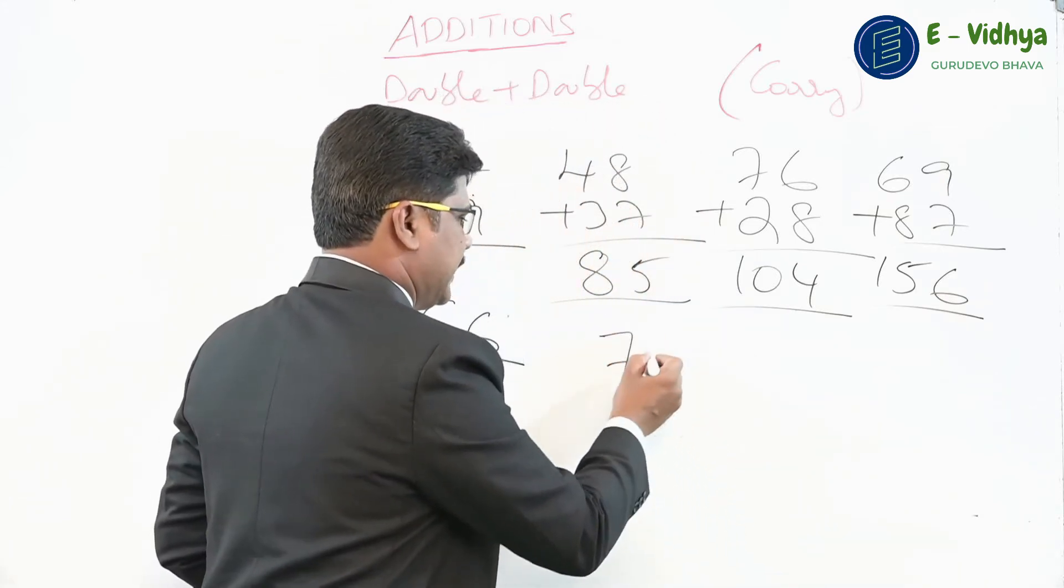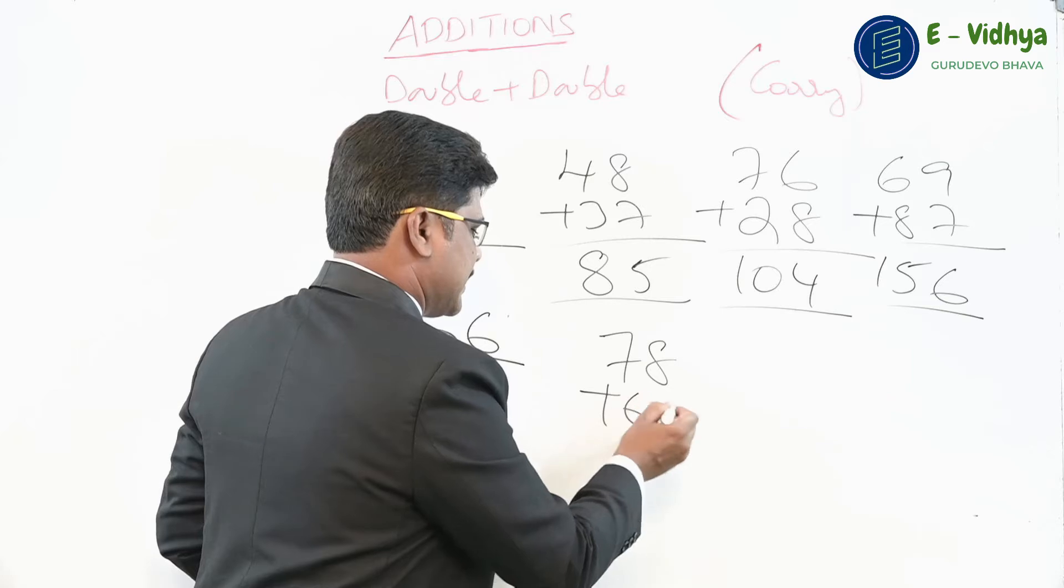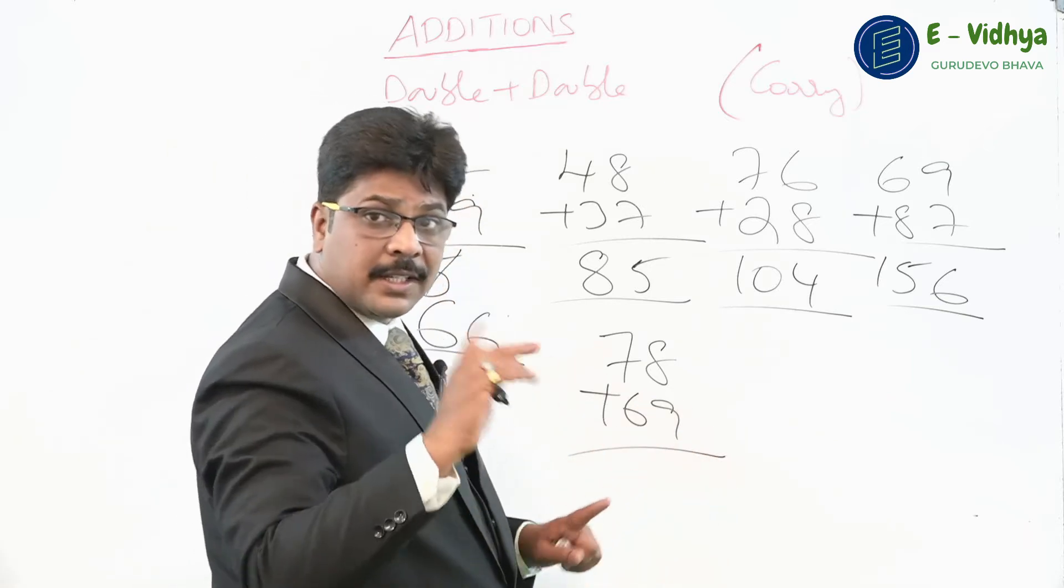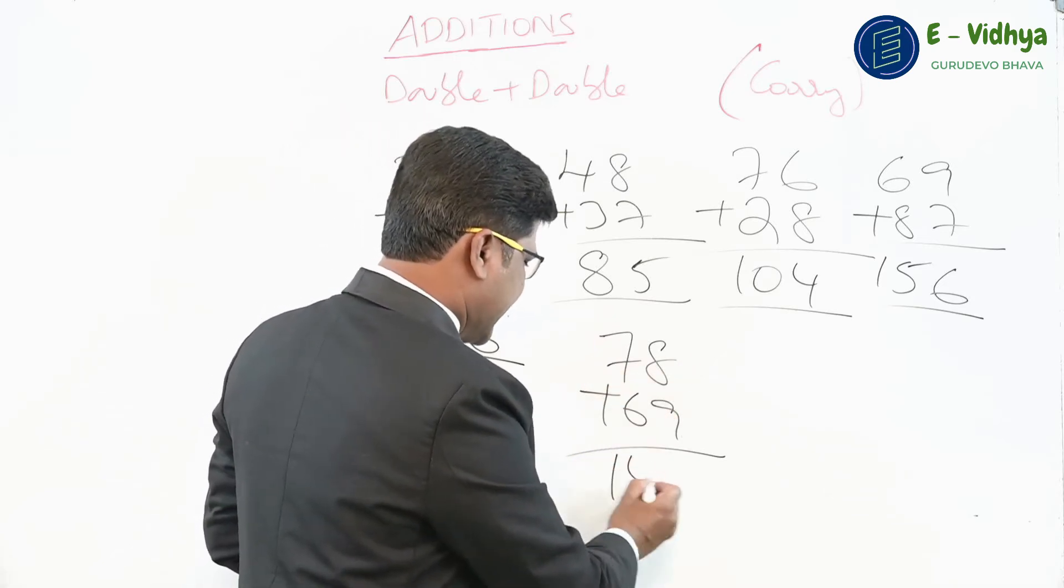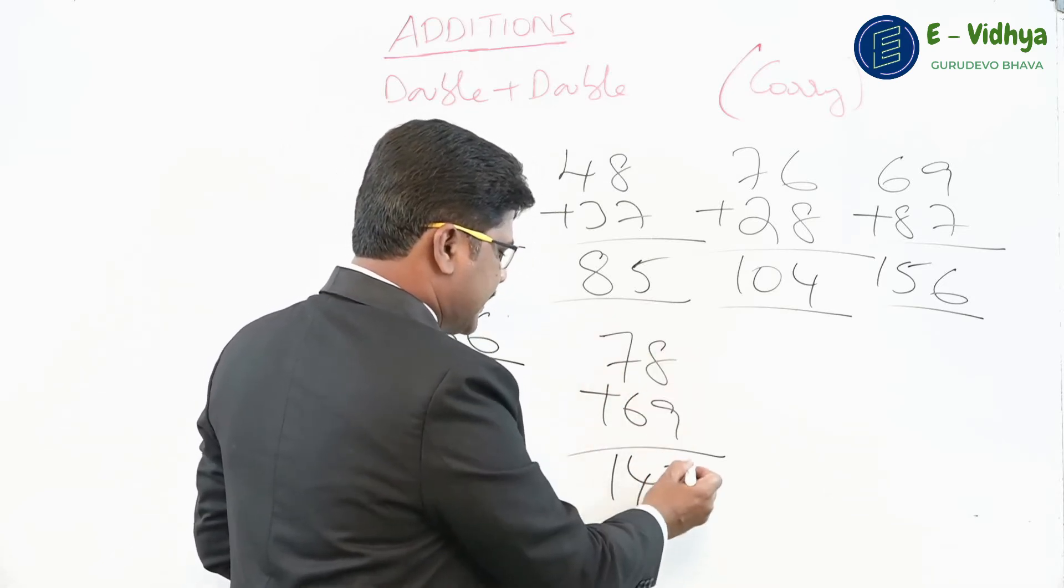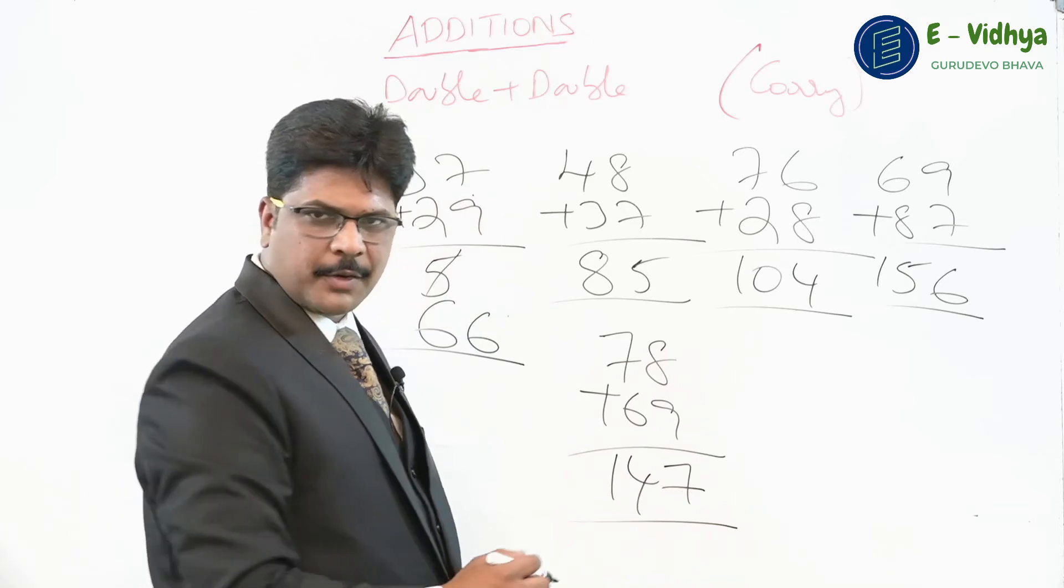One more example: something like 78 plus 69. 7 plus 6 is 13. If you are perfect in end numbers, you can do that. So 13, one number more is 14 because next place is a carry. End number of 9 and 8 is 7, and that's the answer: 147.